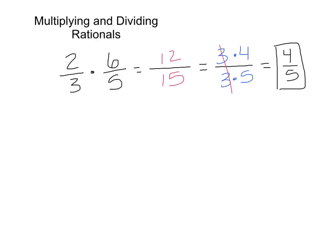This is simple enough to do when you're dealing with numbers, but once we are looking at terms with x's and other variables, we want to sort of streamline our process. So let's go back to the very beginning. I want to look at that first fraction: 2 over 3 times 6 over 5. We can actually factor those a little bit further and simplify before actually going to the second step.